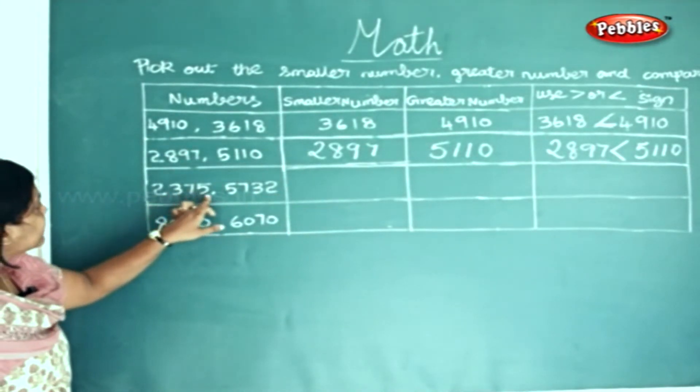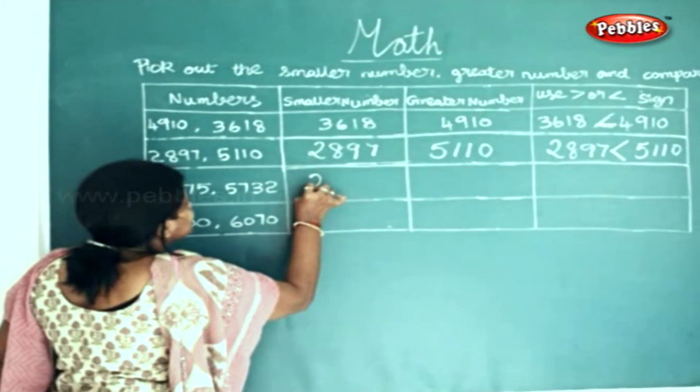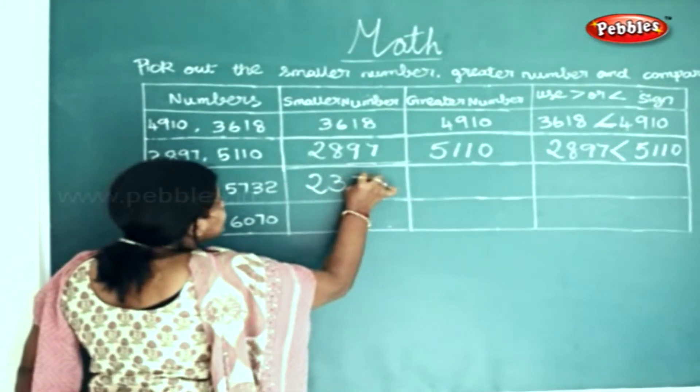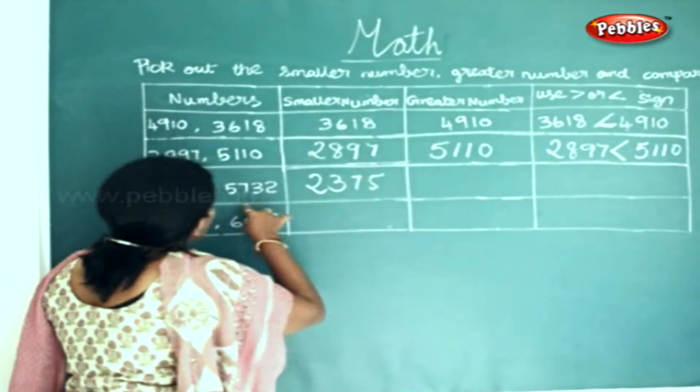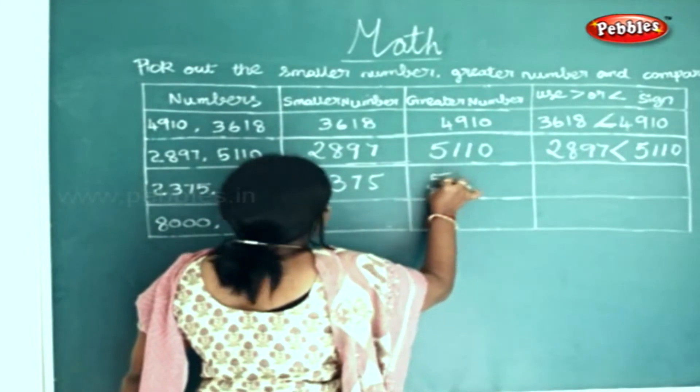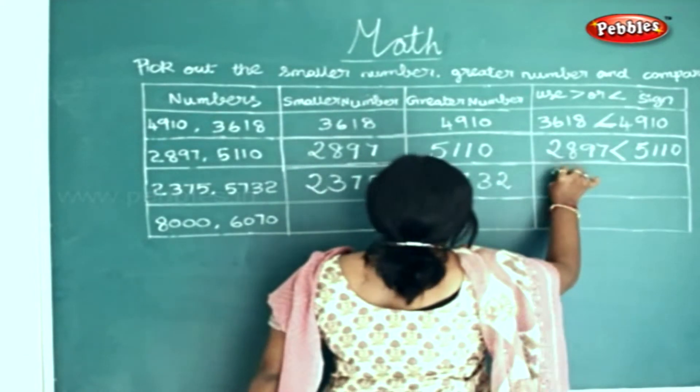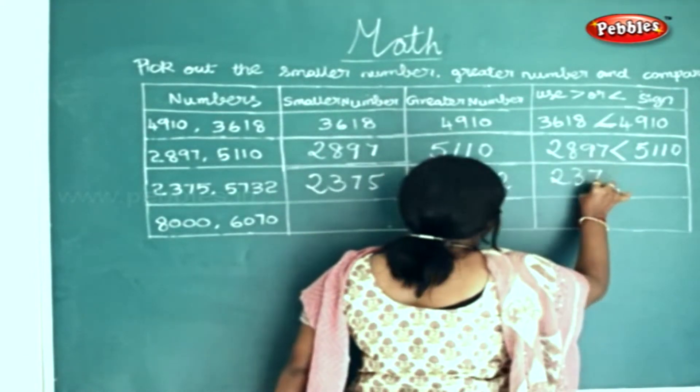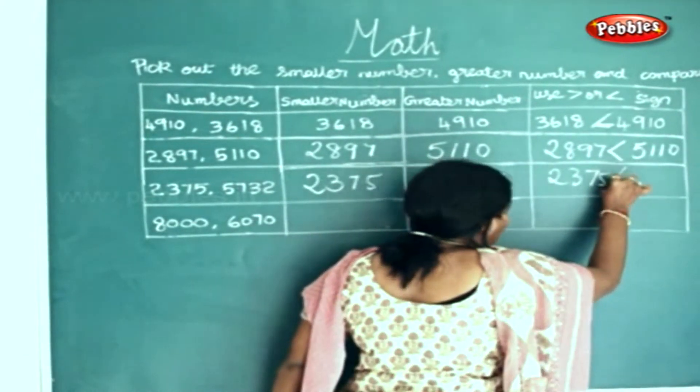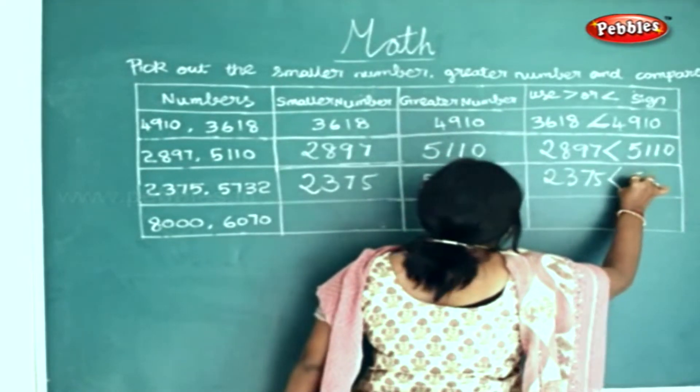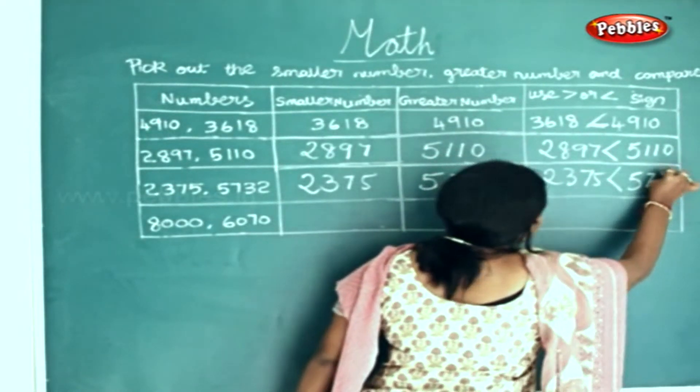2375 is the smaller number and 5732 is the bigger number. So 2375 is smaller than 5732.